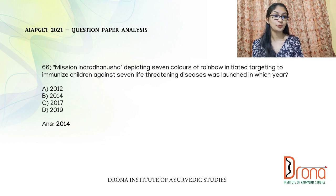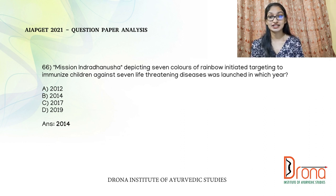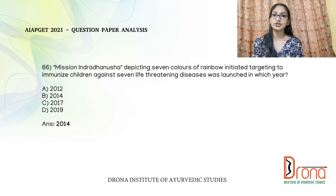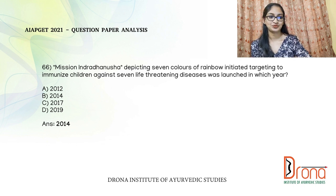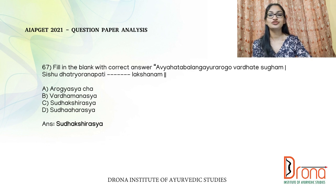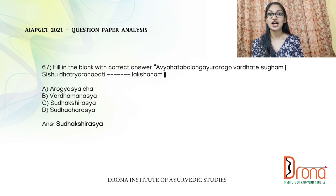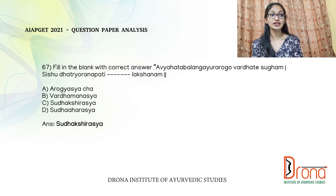The next question: Mission Indra Dhanush, depicting seven colors of the rainbow and targeting immunization of children against seven life-threatening diseases, was launched in which year? Mission Indra Dhanush was launched in 2014.